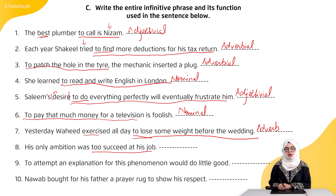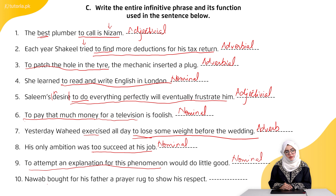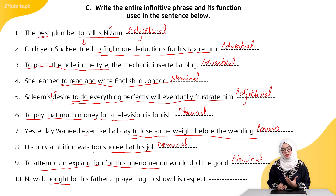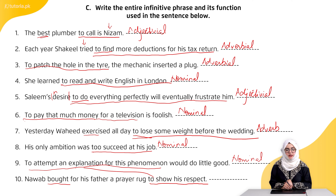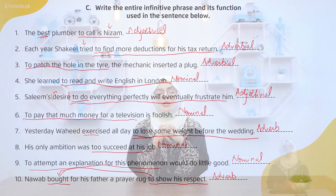Eighth: 'His only ambition was to succeed at his job.' What was his only ambition? To succeed at his job — so yeh nominal case hai, infinitive phrase acting as a noun. Ninth: 'To attempt an explanation for this phenomenon would do little good.' 'To attempt an explanation for this phenomenon' — this is also nominal. Tenth: 'Nawa bought for his father a prayer rug to show his respect.' 'To show his respect' — yeh infinitive phrase hai. Nawa ne kyun kharida? To show his respect — additional information verb ke baare mein, so the infinitive phrase is acting as an adverb.